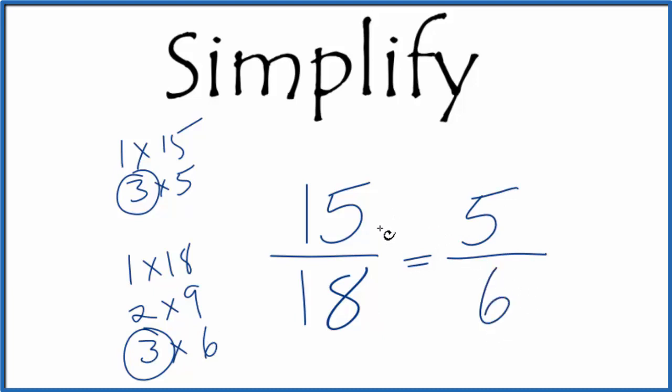So we can simplify the fraction 15 eighteenths down to 5 sixths. And this is an equivalent fraction. If you divided 15 by 18, you'd get the same number as if you divided 5 by 6.